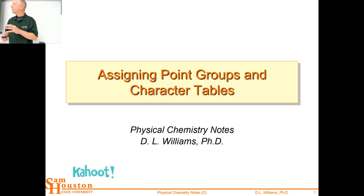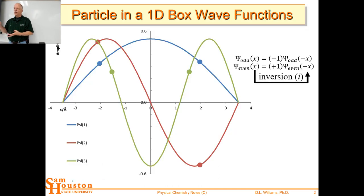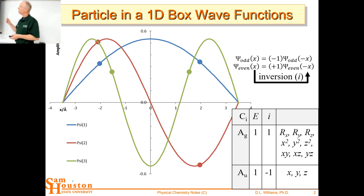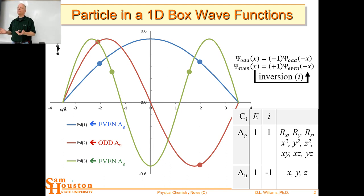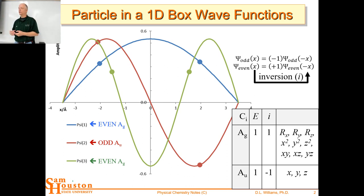We have worked on this in lab all week assigning point groups using the character table flowchart. There will be a quick Kahoot in a few minutes to check your learning. When we looked at wave functions in a particle in a box, we were able to identify even and odd character. If the wave function has the same sign on either side of the origin it's an even function, and if it has opposite sign it's an odd function. There's a whole area of mathematics called group theory, and that's what we're using in chemistry to understand even and odd wave functions. Today we're going to go into three dimensions with that and identify even and odd wave functions, but for this single dimension system what we're looking at is inversion.